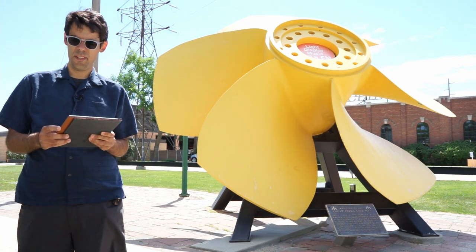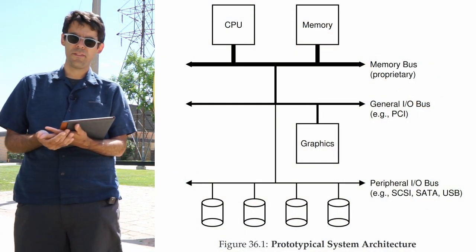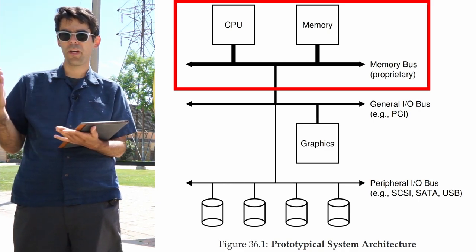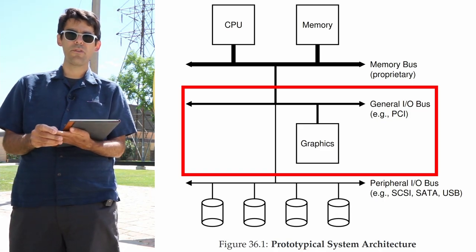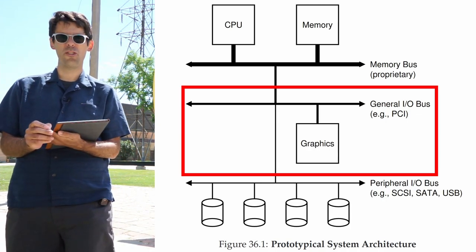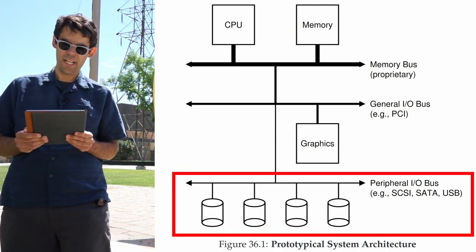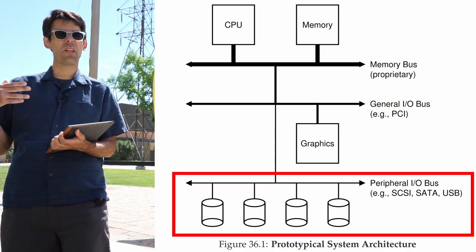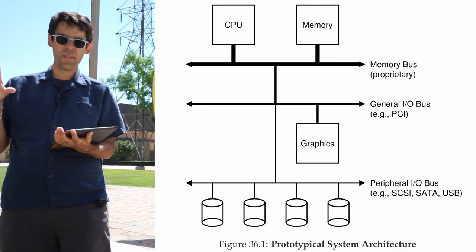We're going to start with the general system architecture — this is figure 36.1. In this diagram we've got a bunch of different components all connected to each other. We've got the CPU and memory at the top, interconnected over a memory bus. Then at a slightly lower level we've got graphics adapters connected over a general IO bus — the example given here is PCI. At the very lowest level we've got a peripheral IO bus, and attached to that are things like SCSI, serial ATA, and USB. Everything in this diagram is connected by a bus.